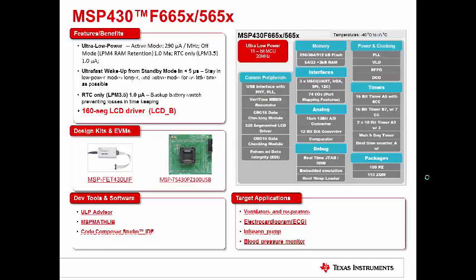An example of a device family with the LCD-B module is the F665X family, which can support up to 160 segment LCD using LCD-B. Some target applications for this device include blood pressure monitors, ventilators and respirators, and other applications. One of the main features that people are often interested in on the 665X family is that it goes up to 512 kilobytes of flash or 64 kilobytes of RAM.